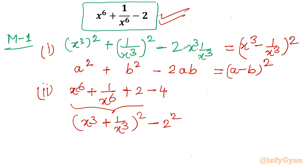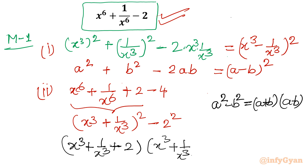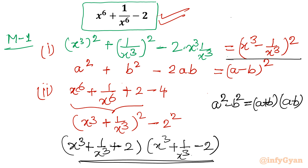Now we use the powerful identity — the difference of two squares: a² - b² = (a + b)(a - b). Let's apply it. So (a + b) gives (x³ + 1/x³ + 2) and (a - b) gives (x³ + 1/x³ - 2). So two ways have been shown.